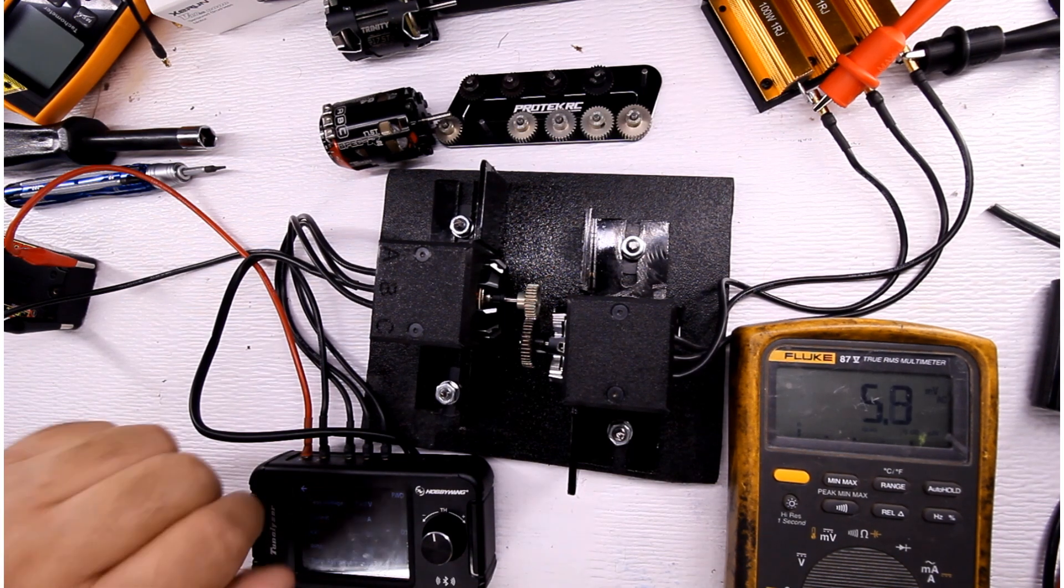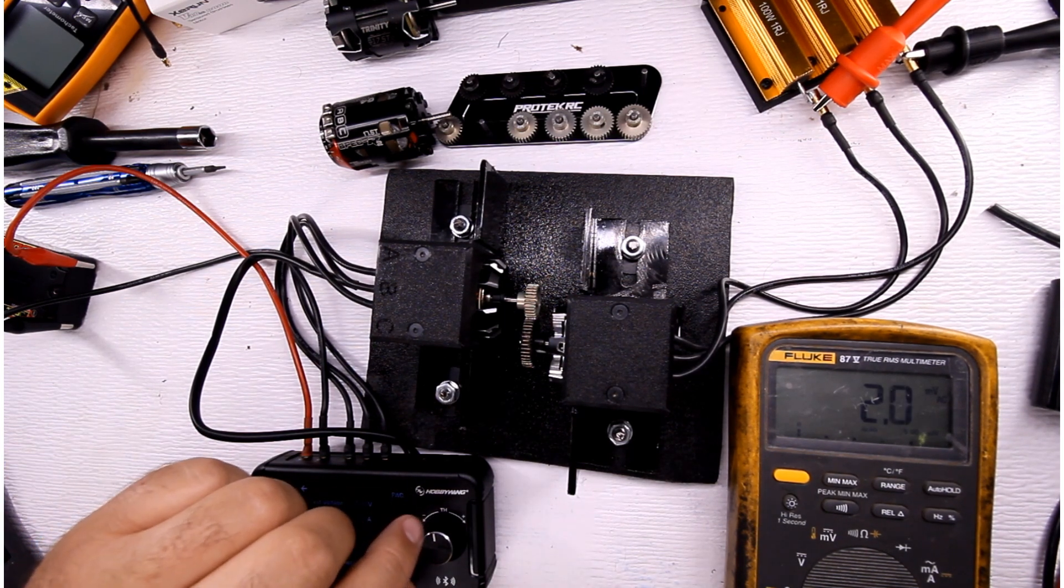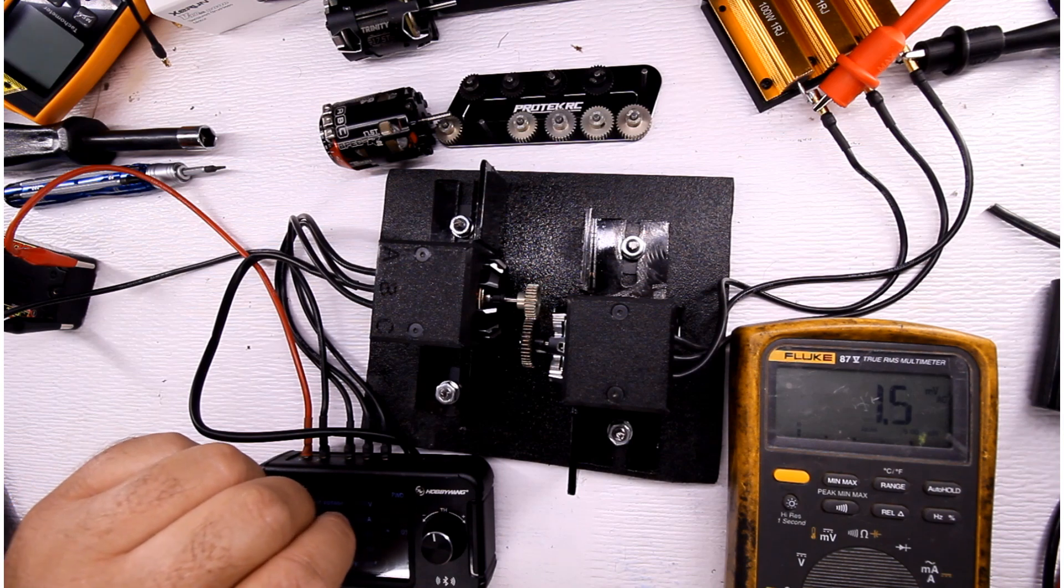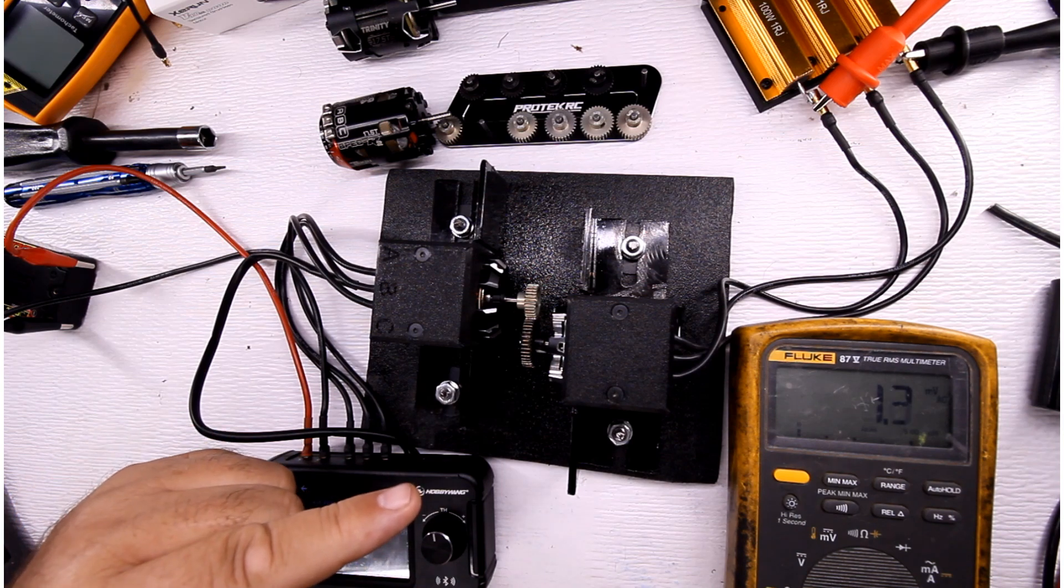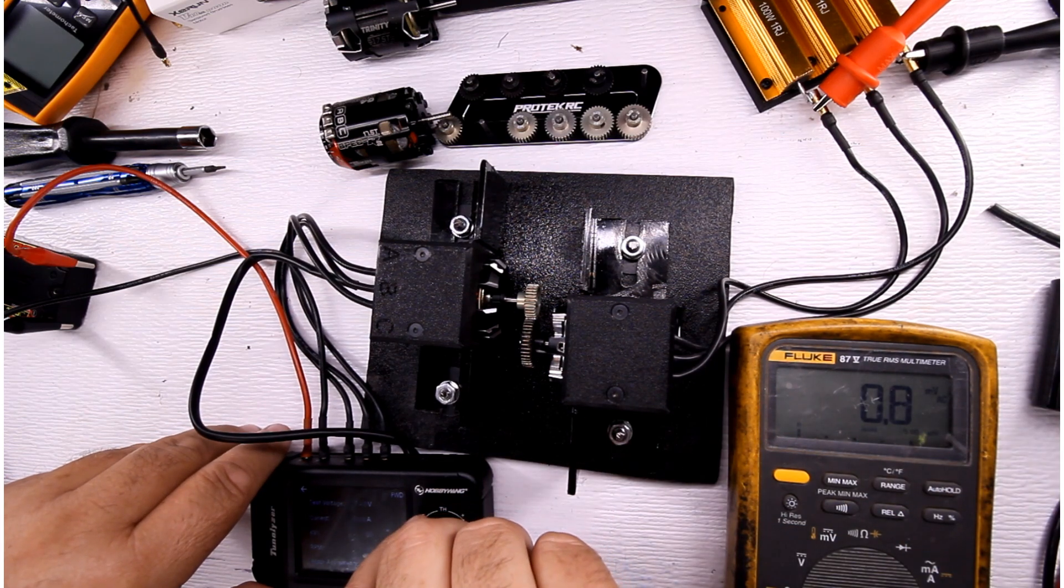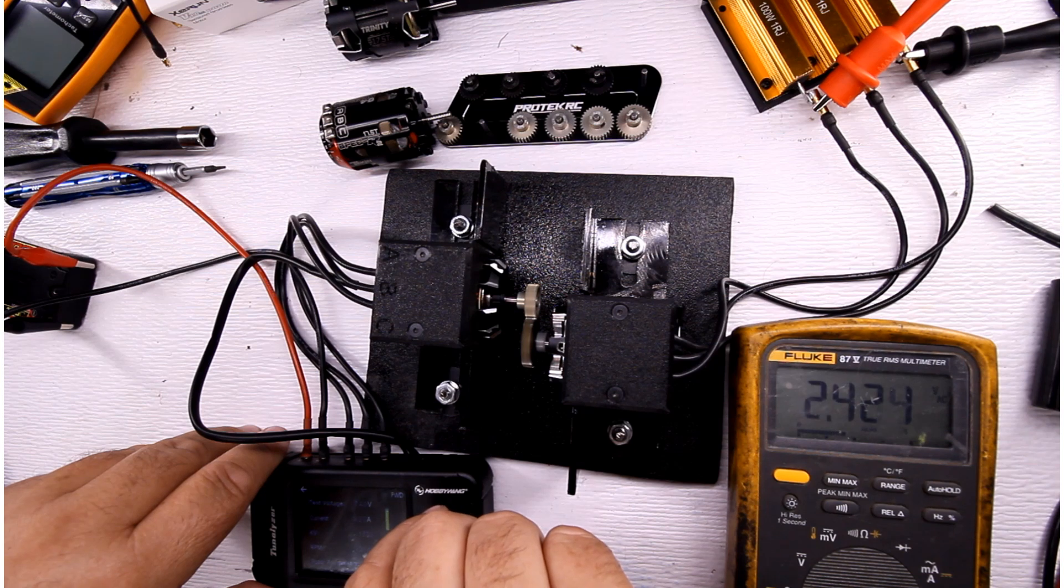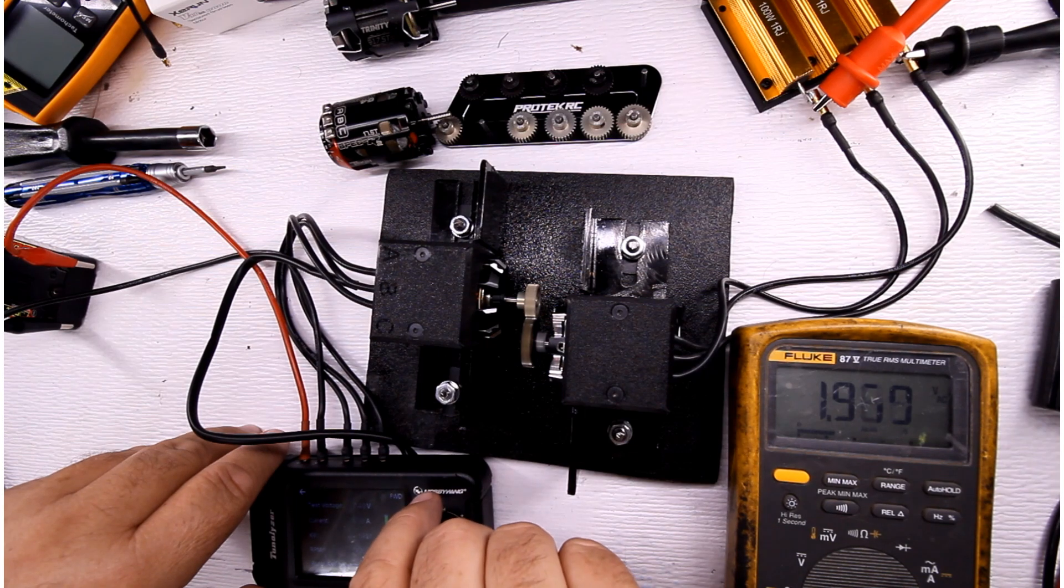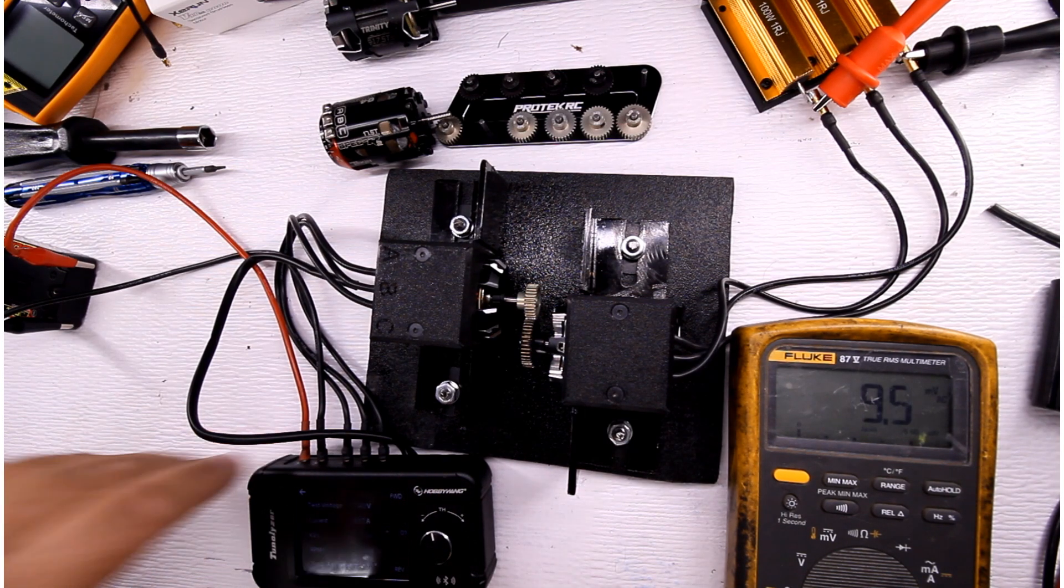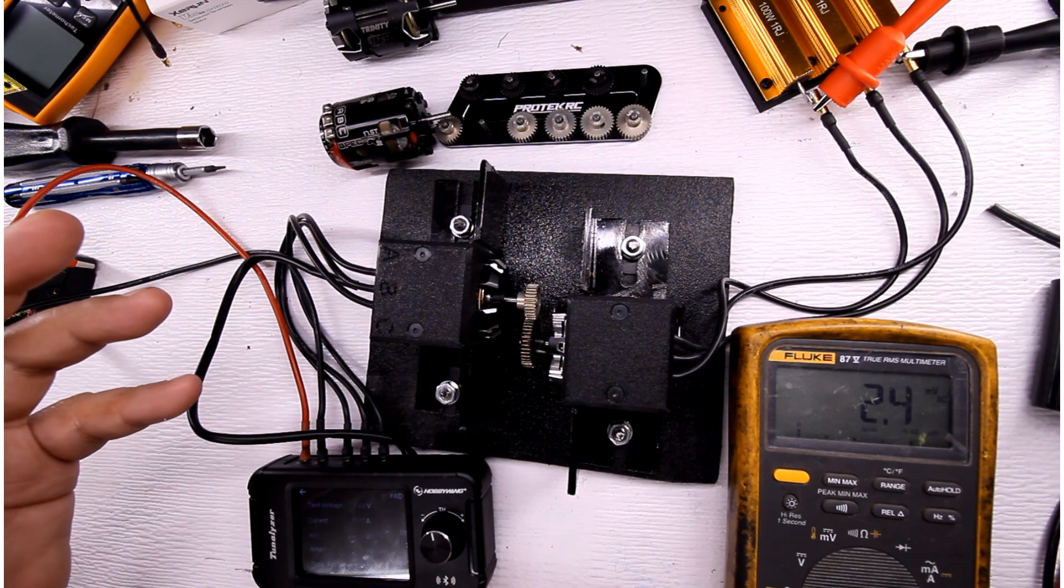And now, another thing I could do with this as well is say, what is the power on how much juice will it take, or on here, what will it be at if I put at around 50% throttle. I can look at that, see if you're just going, if you're not going full throttle, what's going to be the amp draw.